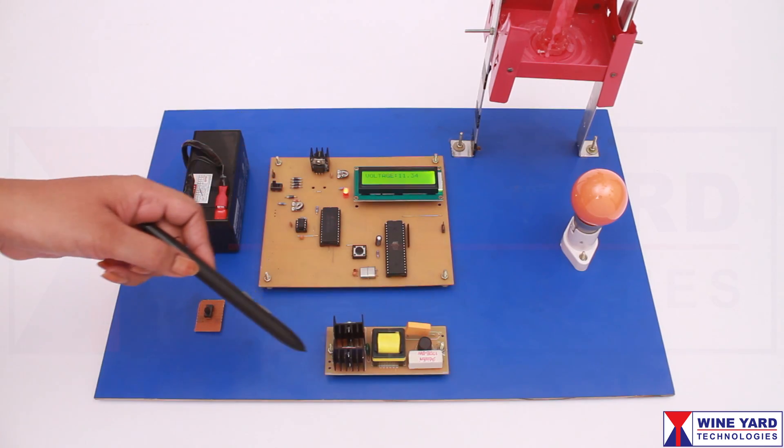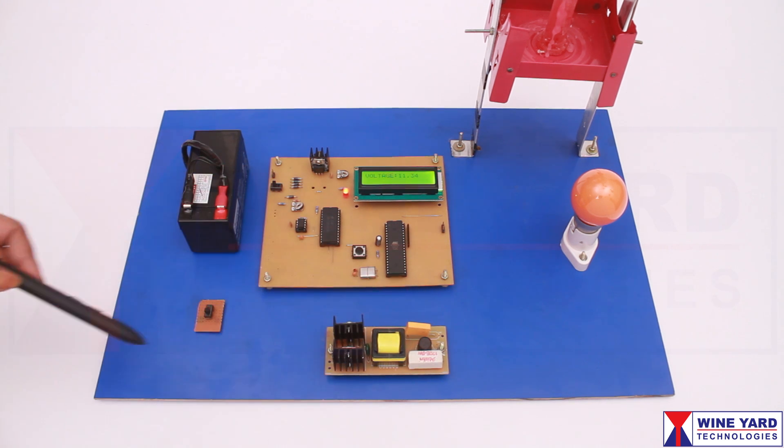This is a simple micro-inverter circuit. This converts the DC voltage to AC voltage to power on the AC loads.